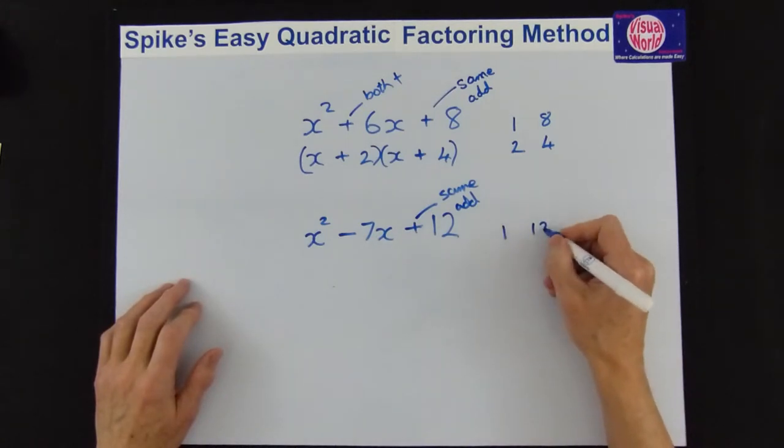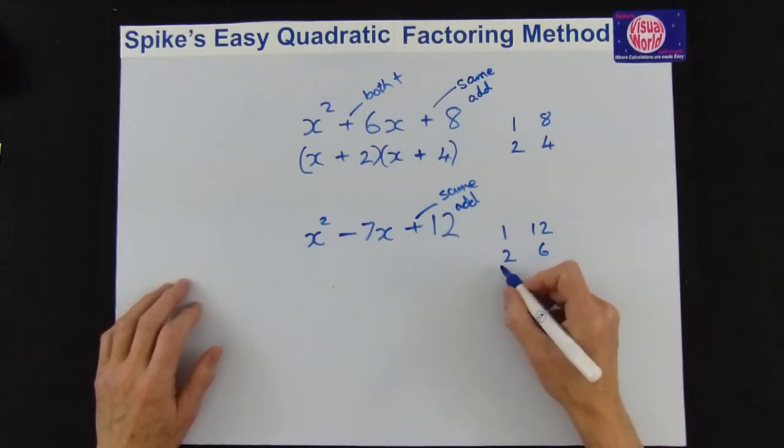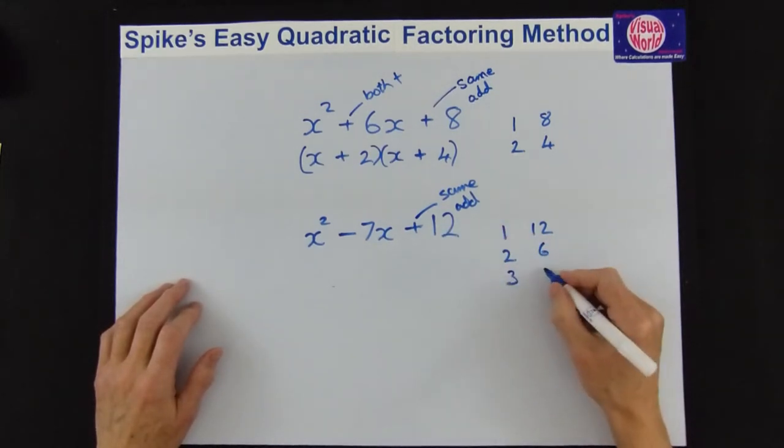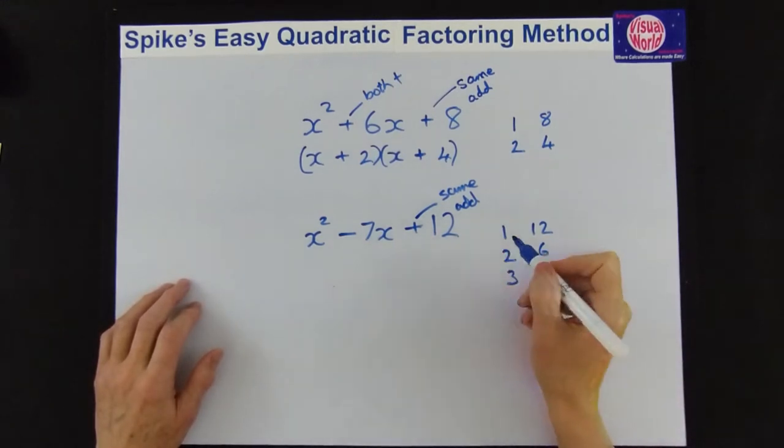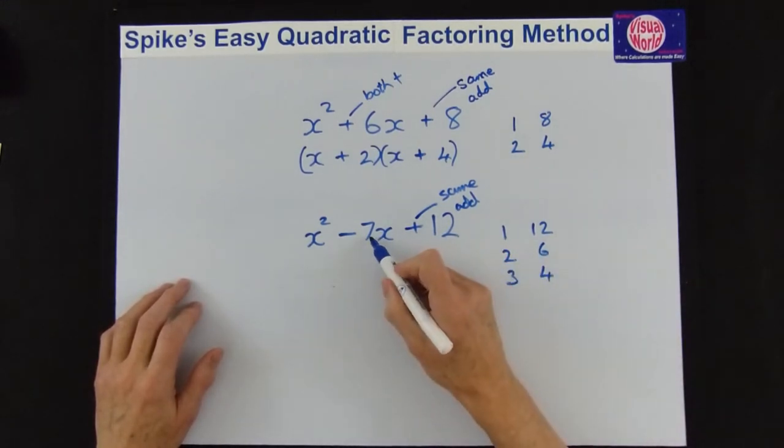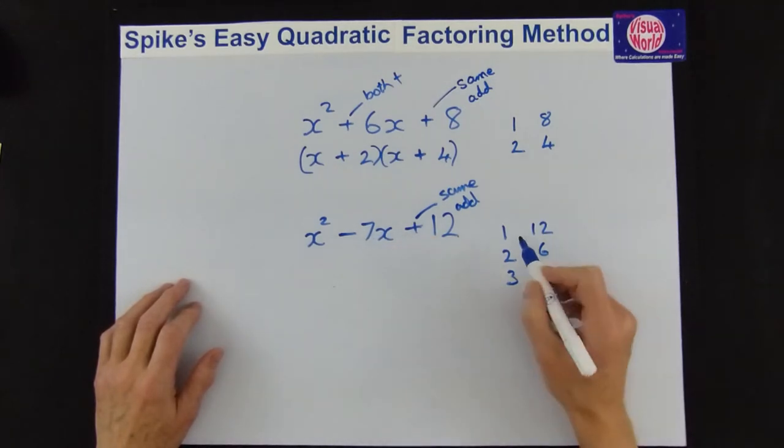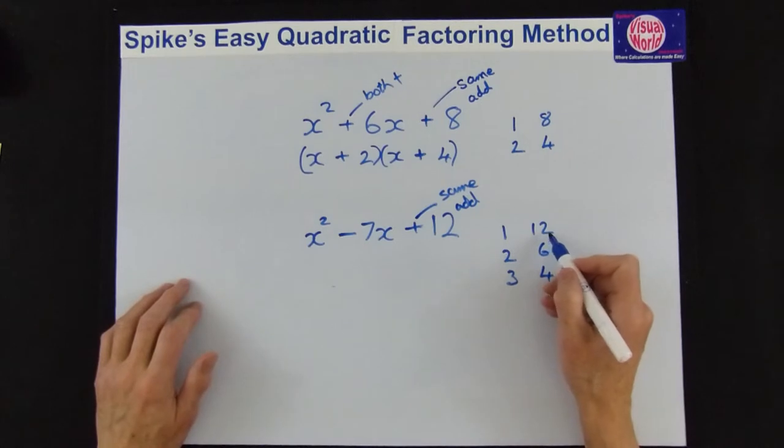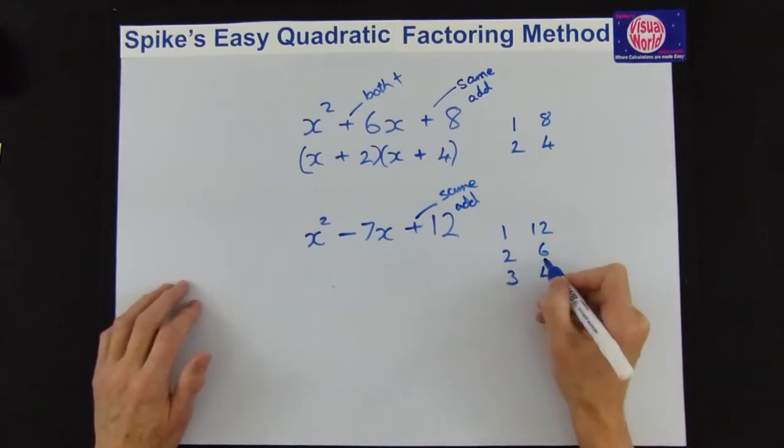So we start with factors of 12 and 12's got an extra factor. We've got 1 and 12, 1 times 12 gives you 12, 2 and 6, 2 times 6 gives you 12, or 3 times 4 gives you 12. Now we've got to add to give you 7, just ignore the sign button now, we've got to add to give you 7. So you go 1 plus 12 is 13, not right, 2 plus 6 is 8. But 3 plus 4 is 7. So that is your answers.